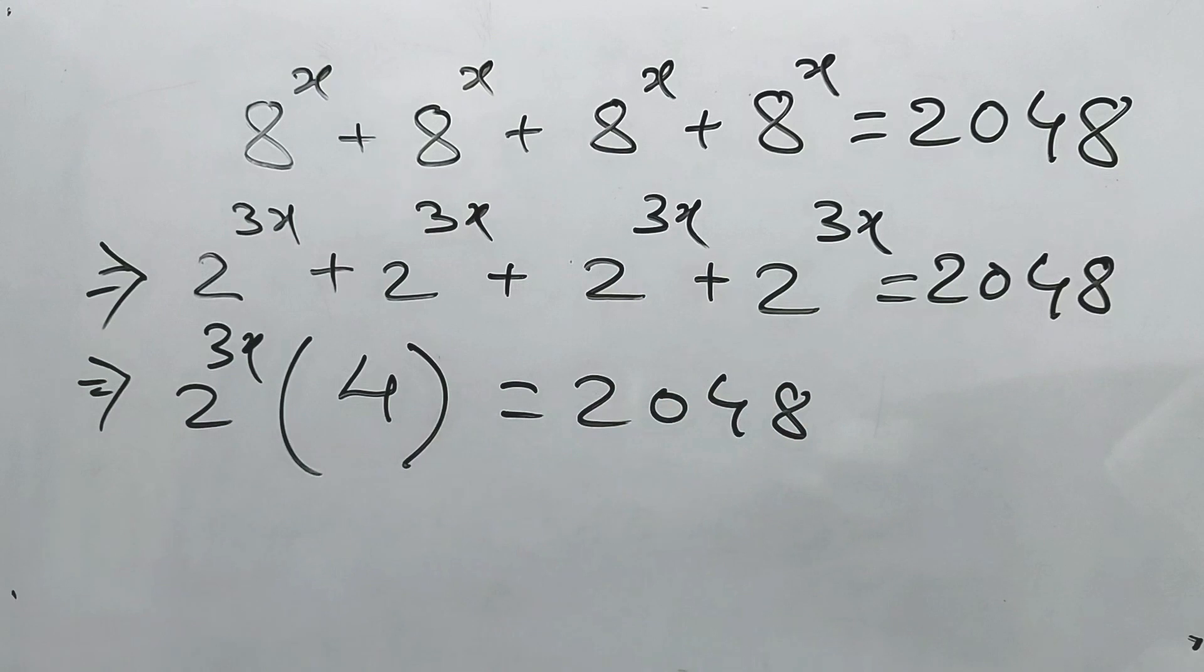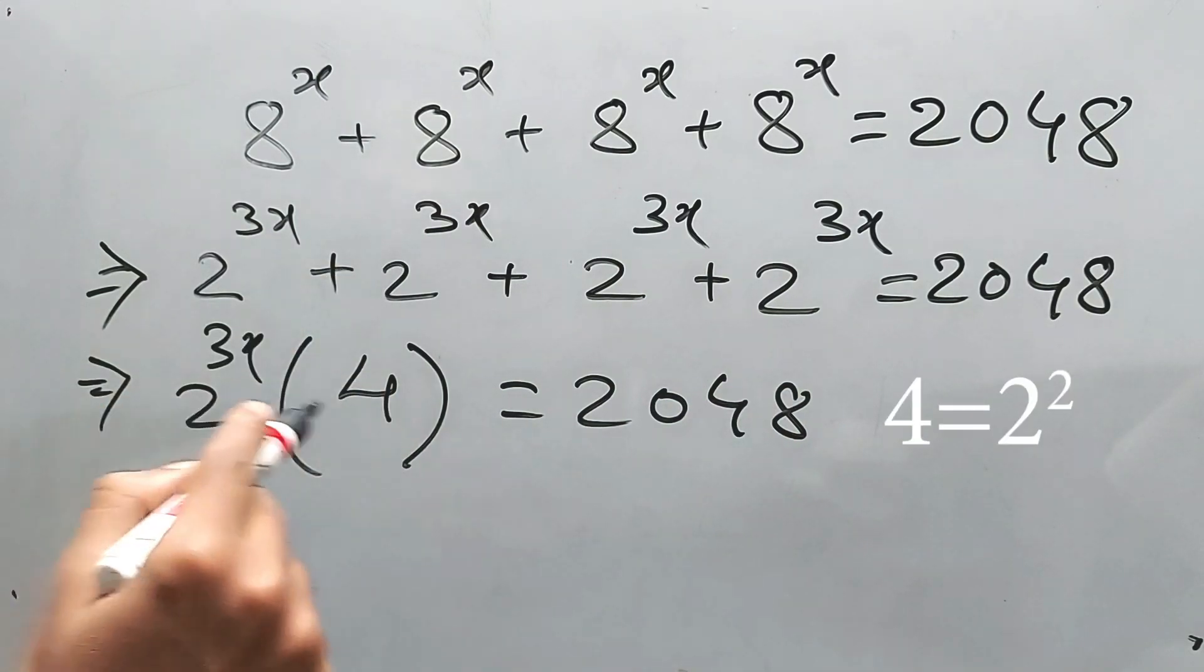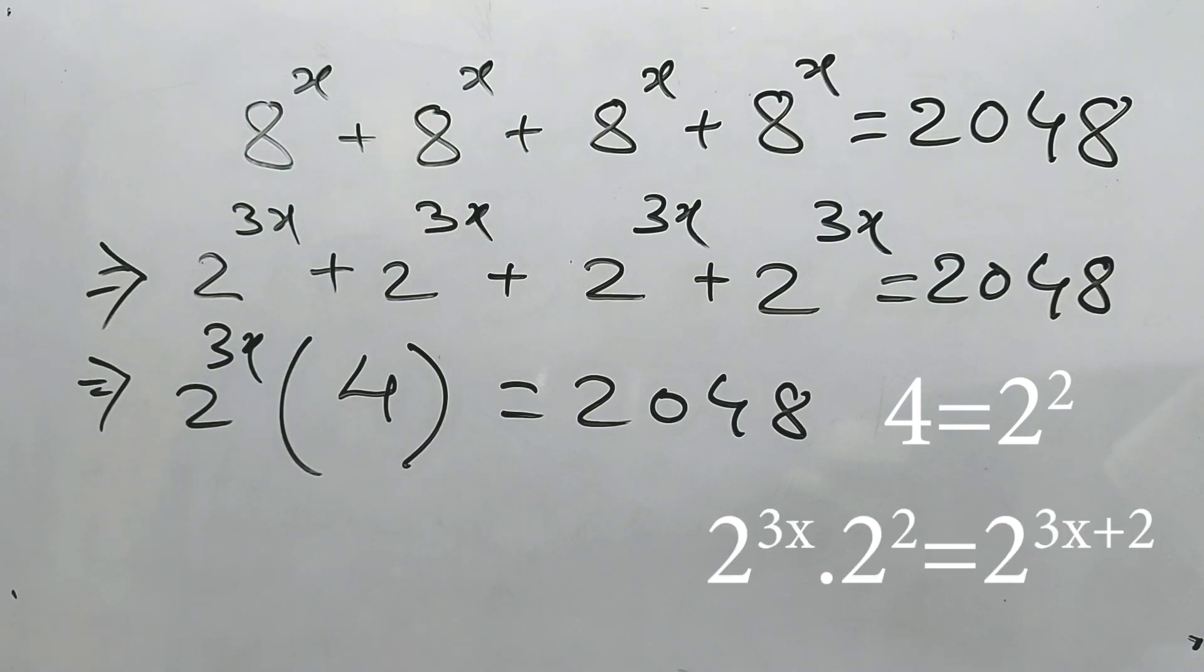And this one is equal to 2048. Now 4 is 2 square, right? So while multiplication, the powers will be added, we know this one.